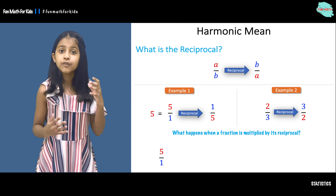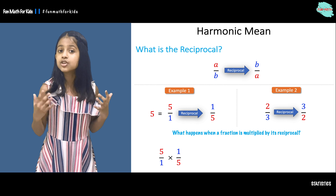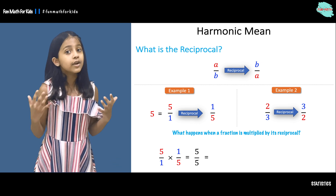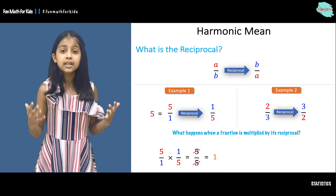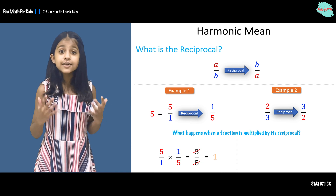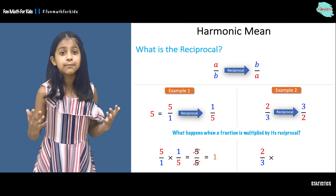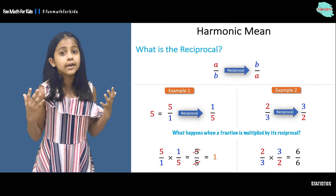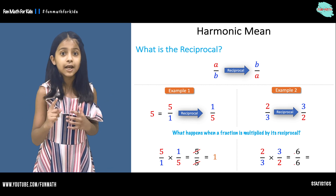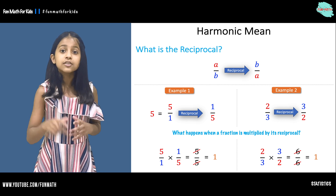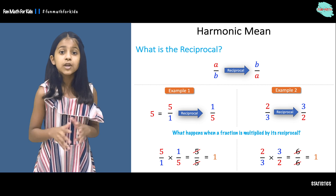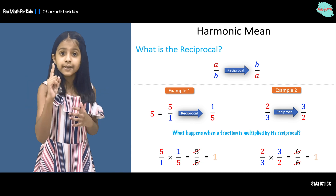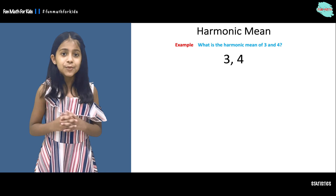What happens when a fraction is multiplied by its own reciprocal? For example, we have five over one multiplied by its own reciprocal, one over five. If we multiply this we get five over five, and five over five is just one. In another example, two over three multiplied by its reciprocal three over two gives us six over six, which equals one. So there's something very important to remember: when a fraction is multiplied by its own reciprocal, we always get one.